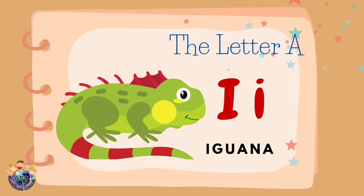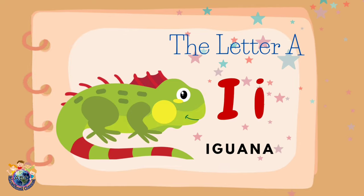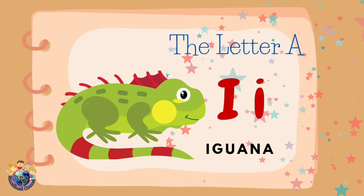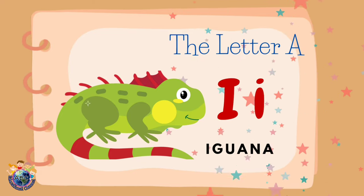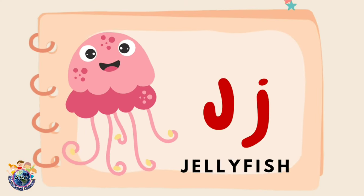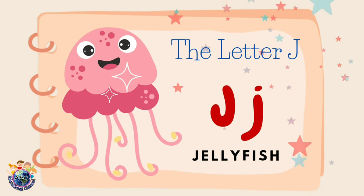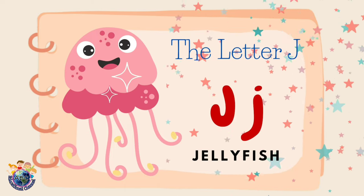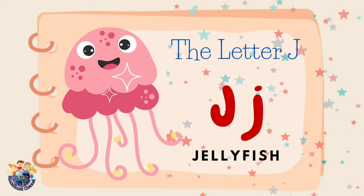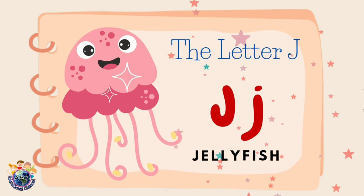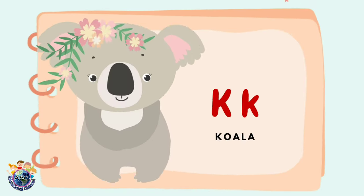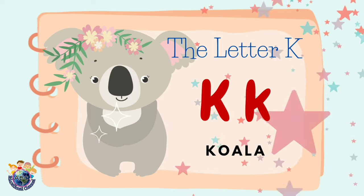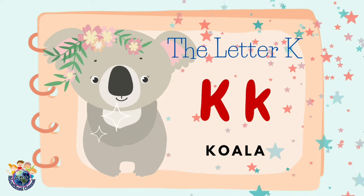The letter I. I is for iguana. Iguana. The letter J. J is for jellyfish. Jellyfish. The letter K. K is for koala. Koala.